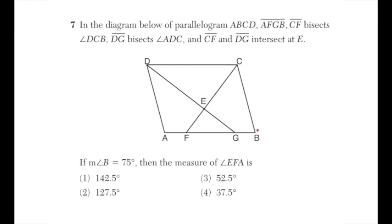Question number seven: in parallelogram ABCD, CF bisects angle DCB and DG bisects angle ADC. CF and DG intersect at E. If angle B = 75°, what is the measure of angle EFA? Since opposite sides of a parallelogram are parallel and CB is a transversal, angle DCB = 105° because angles B and DCB are supplementary.